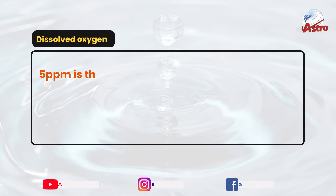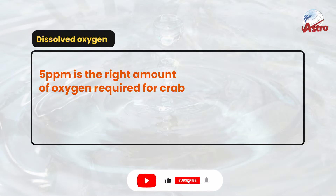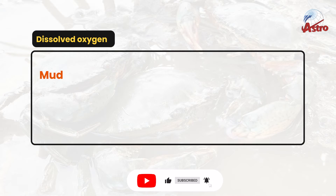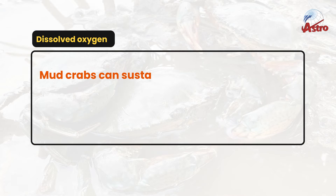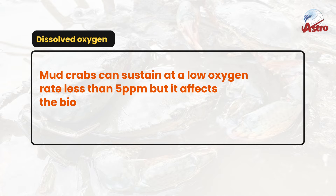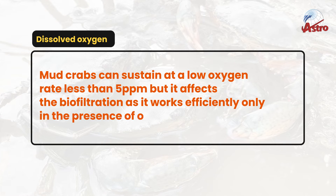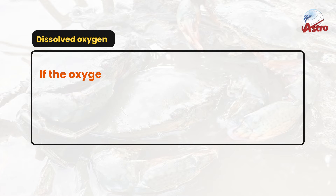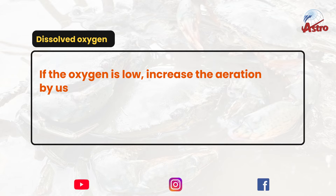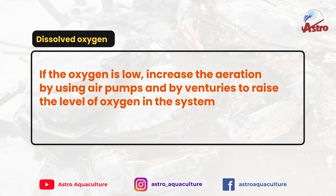Dissolved oxygen: 5 ppm is the right amount of oxygen required for crab farming. Mud crabs can sustain at a low oxygen rate less than 5 ppm, but it affects the biofiltration as it works efficiently only in the presence of oxygen. If the oxygen is low, increase the aeration by using air pumps and venturis to raise the level of oxygen in the system.